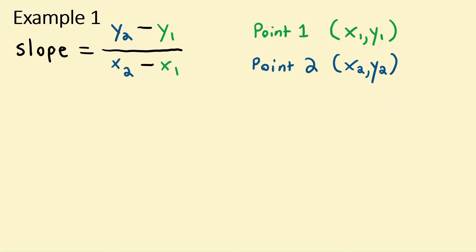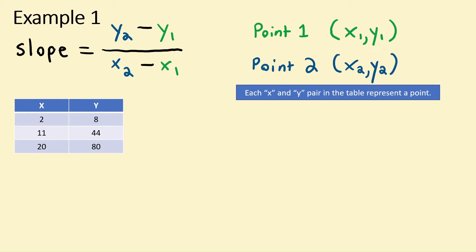Now let's apply this to an example to better understand exactly how we can use our formula to find slope. In this example, we're given a table full of x and y values. Each x and y pair in the table represent a point.